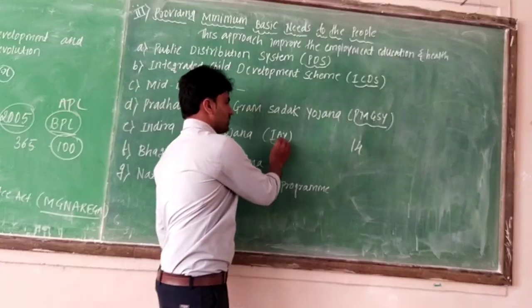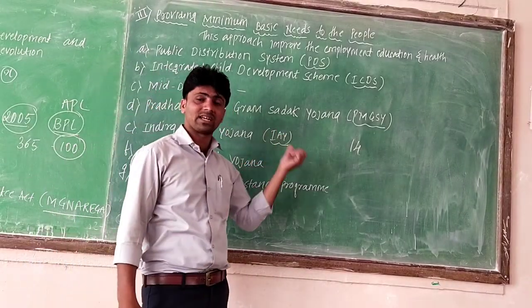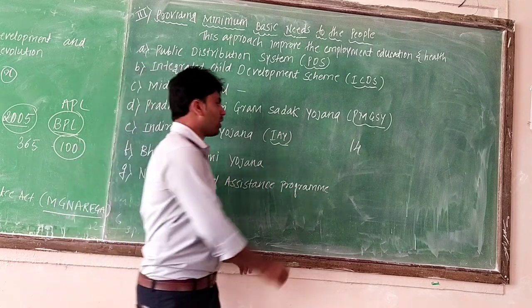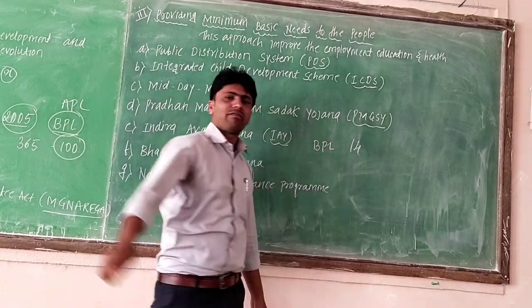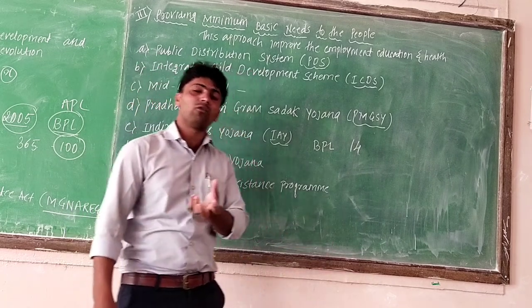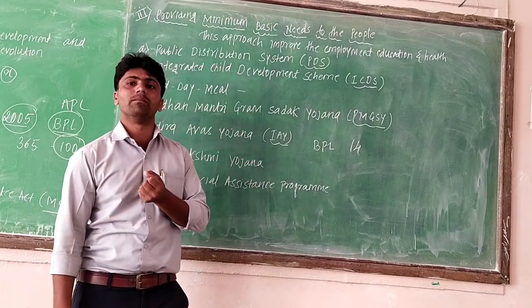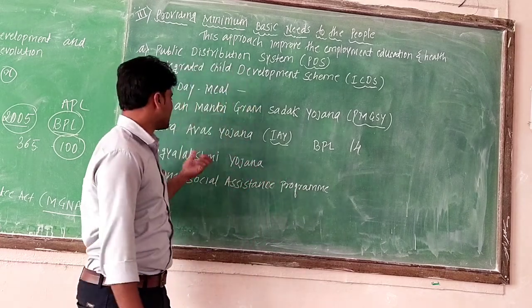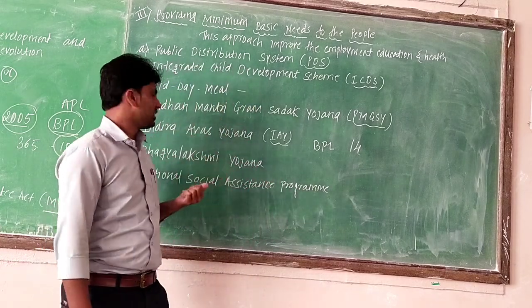Next is the Indira Awaas Yojana. Under this scheme, for those poor people living in BPL families, every year the government gives a lump sum amount to construct a new house. That is the Indira Awaas Yojana.